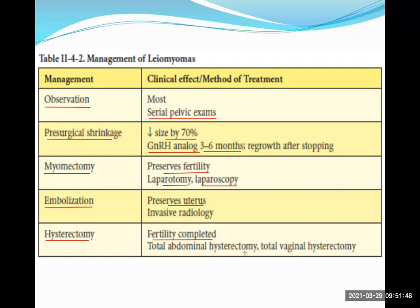For total abdominal hysterectomy, it is advisable to shrink the tumor beforehand to reduce bleeding and complications. Before total vaginal hysterectomy, shrinkage is essential — if the size is too big, the uterus cannot come out through the vaginal route.